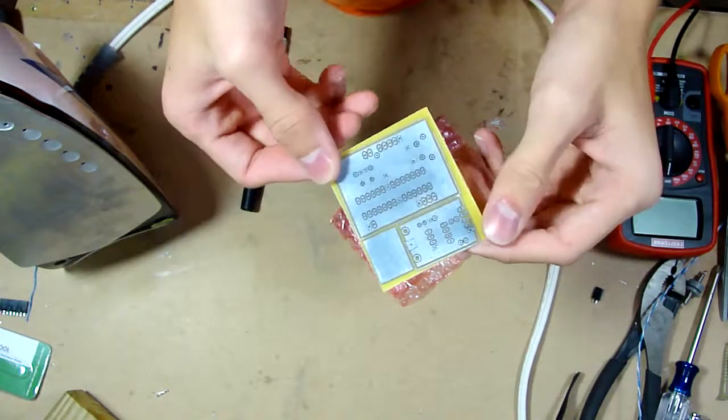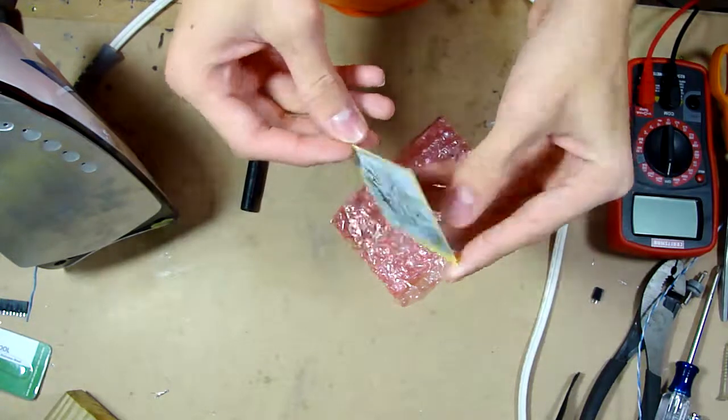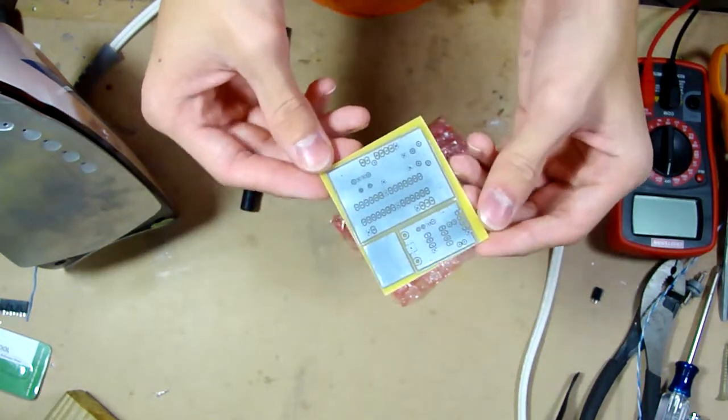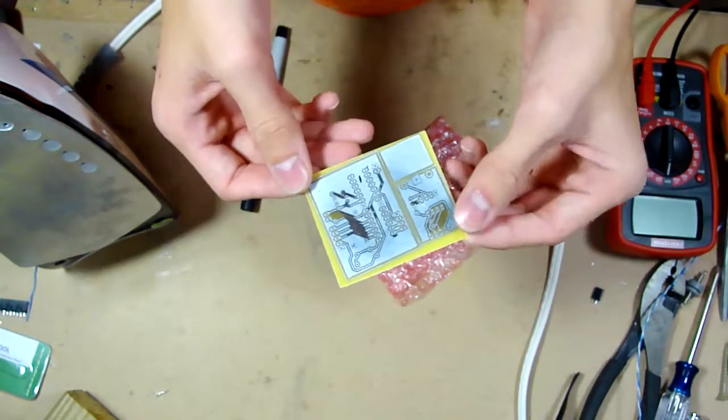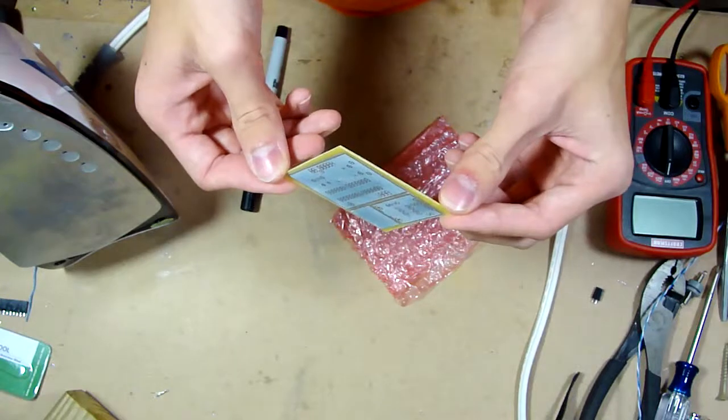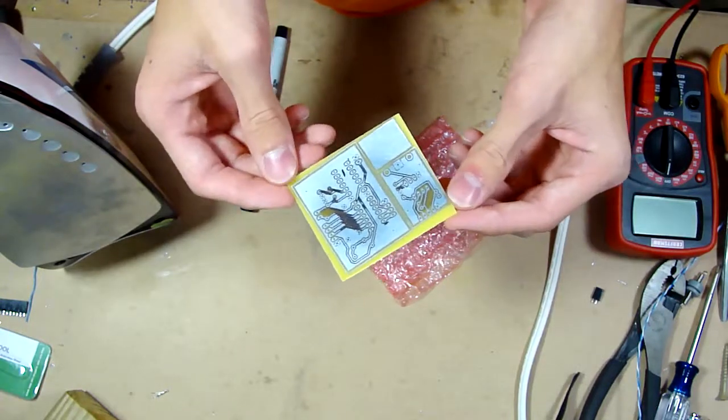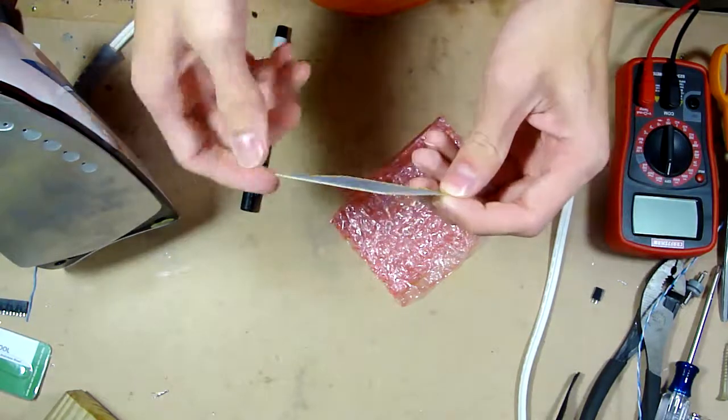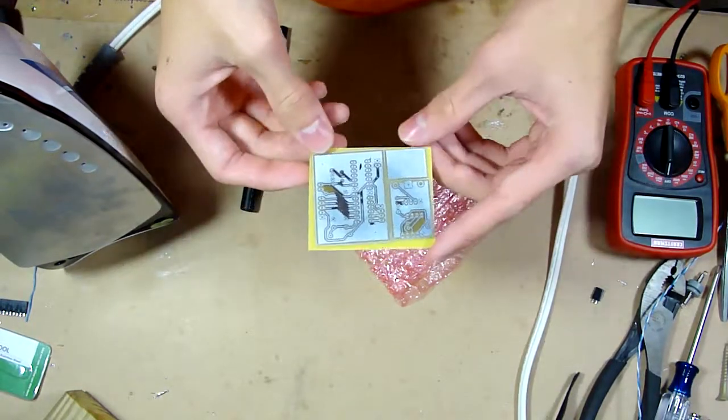So the circuit board is done being etched and it turned out well. Now I have to get the toner off and put some clear coat on it to prevent it from oxidizing, and then separate the boards and we'll be done.